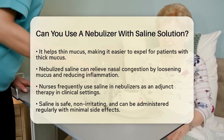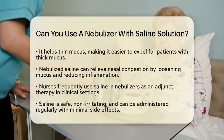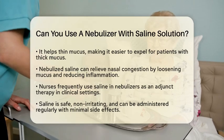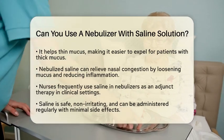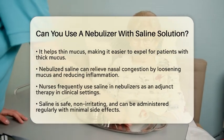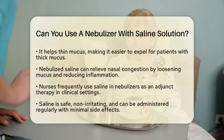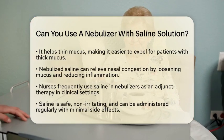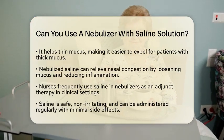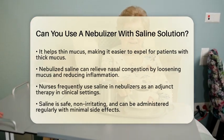Secondly, saline can thin out mucus, which is beneficial for those who produce thick mucus due to conditions like cystic fibrosis. This thinning action makes it easier to expel mucus from the lungs.